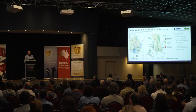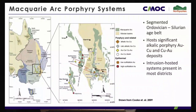Most people have already been well primed on where we are in the world by the talks earlier today. We are in the Macquarie Arc, in the Junee Narromine Belt, and I'm going to be talking about these intrusion-hosted systems throughout our district. You will find examples of these types of deposits throughout any of the camps in this belt or island arc sequences globally.